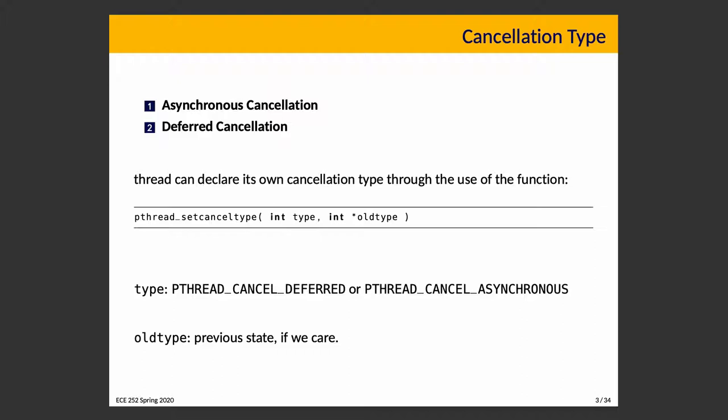Pthread attributes can be used to set the cancellation type. You can also use the pthread_setcanceltype function, which sets it for its own thread — whichever thread is calling the function is the thread whose attribute is being changed. There are two constants: PTHREAD_CANCEL_DEFERRED or PTHREAD_CANCEL_ASYNCHRONOUS. If you care what the previous state was, you can provide a pointer to the old type, which will be updated to tell you what the old type was.